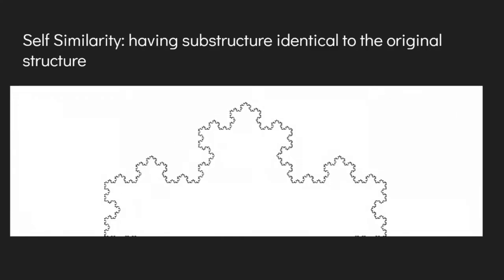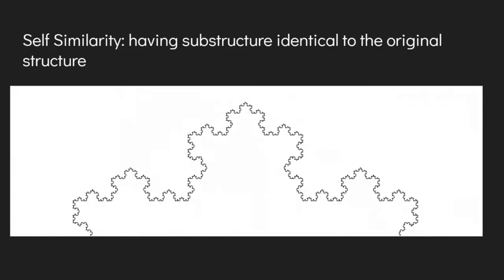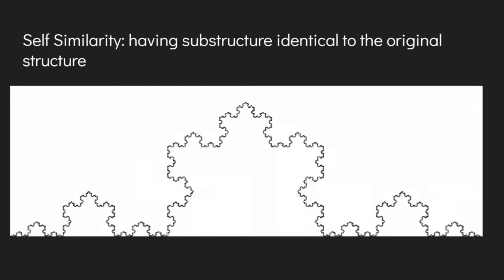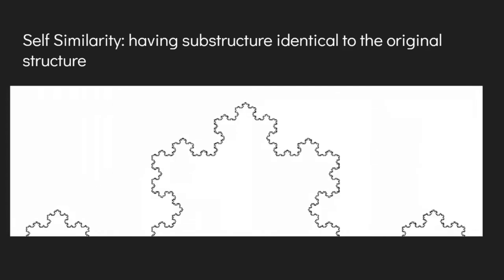As seen in this graphic, the Koch curve is self-similar, meaning that it has substructure identical to the original structure. As we zoom in, the pattern repeats itself.